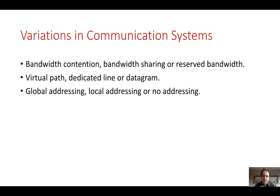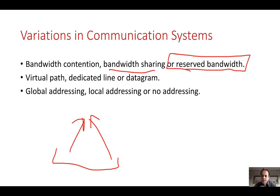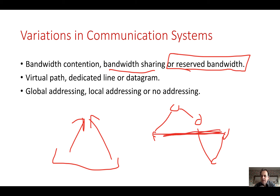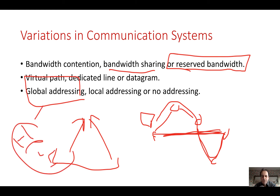There are lots of variations within our communication system. We can have contention networks where nodes must contend for bandwidth, or bandwidth sharing, or reserved bandwidth ensuring each node gets a certain amount. Bandwidth is the amount of data that can be transmitted. We can have a virtual path between two nodes going through switching nodes, or a dedicated line, or a datagram where data is routed across the network. We can have different addressing schemes — a global scheme like IPv4, localized addressing, or even no addressing at all.